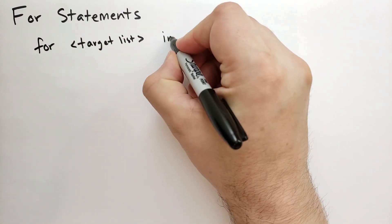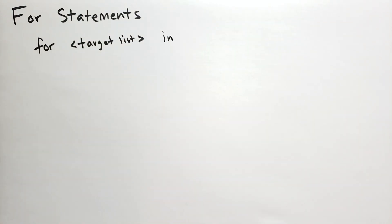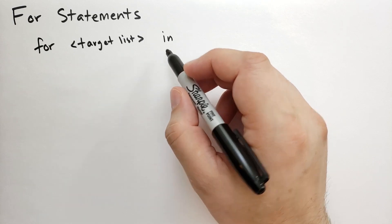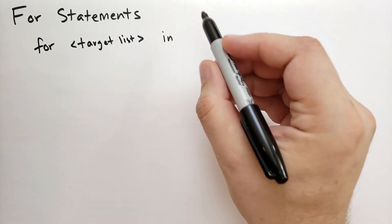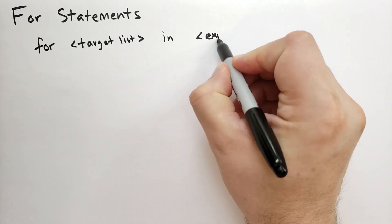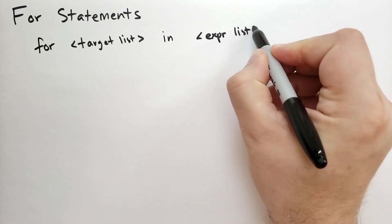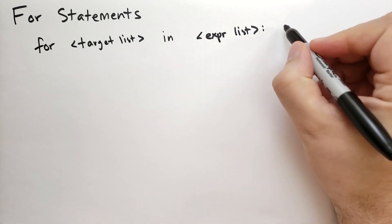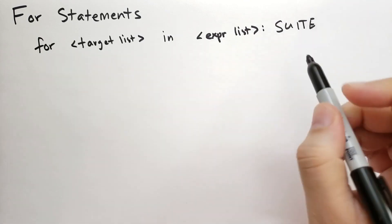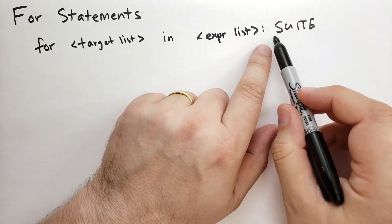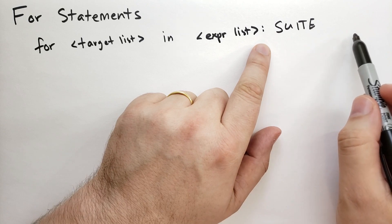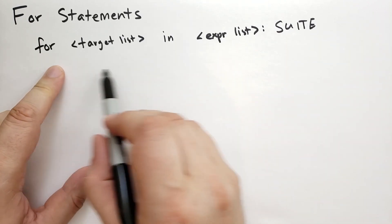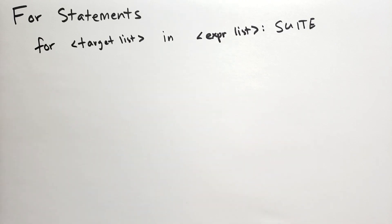After the target list you have the keyword 'in', which means quite a bit different than the operator 'in'. Then you have an expression list followed by a colon, and then a suite. In Python, a suite can either be on the same line with statements separated by semicolons, or you indent by four spaces and have statements stacked one on top of the other.